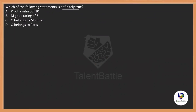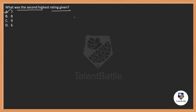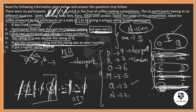For the final sub-question — which statement is definitely true: P got ranking of 10 is false; none got rank 10. M got ranking of five — yes, correct. Q belongs to Mumbai or Paris — we cannot determine this. So 'M got ranking of five' is definitely true — option B. The arrangement may take a minute or two but you are answering four questions from it.